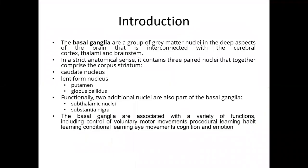The basal ganglia are a group of gray matter nuclei in the deep aspects of the brain, interconnected with the cerebral cortex, thalamus, and brainstem. In the strict anatomical sense, it contains three paired nuclei together: caudate nucleus and lentiform nucleus, where the lentiform nucleus has two parts — putamen and globus pallidus. Functionally, two additional nuclei are also part of the basal ganglia: the subthalamic nucleus and substantia nigra.